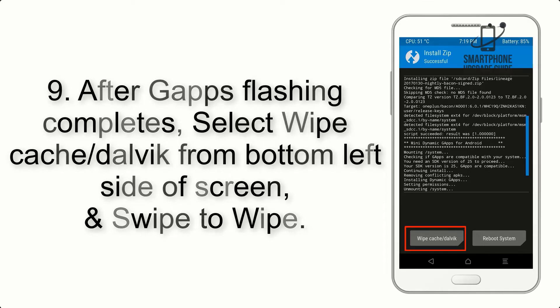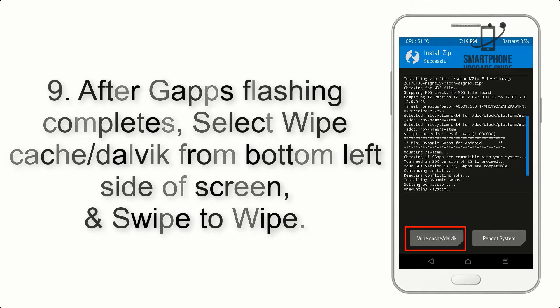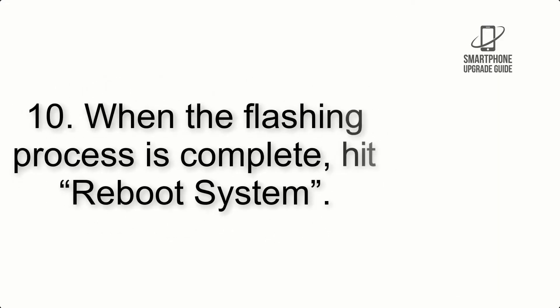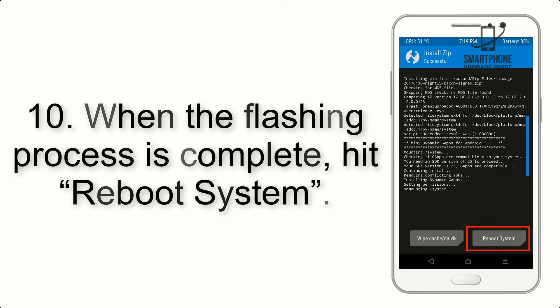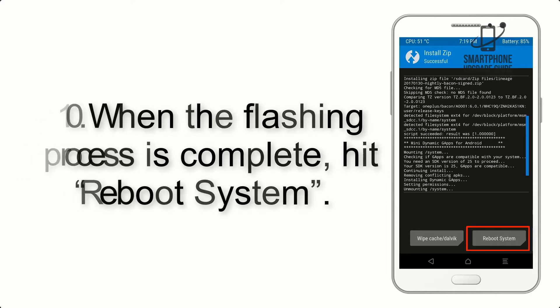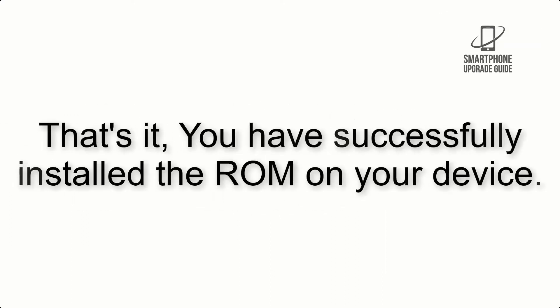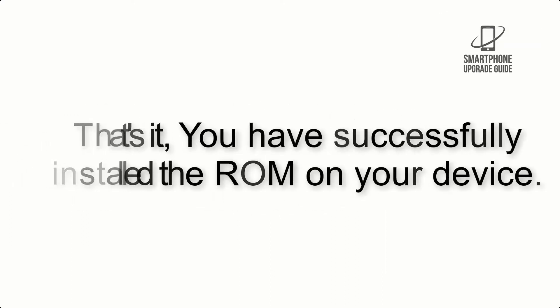Step 9: After GApps flashing completes, select Wipe Cache and Dalvik from the bottom left side of the screen and swipe to wipe. Step 10: When the flashing process is complete, hit Reboot System. That's it — you have successfully installed the ROM on your device.